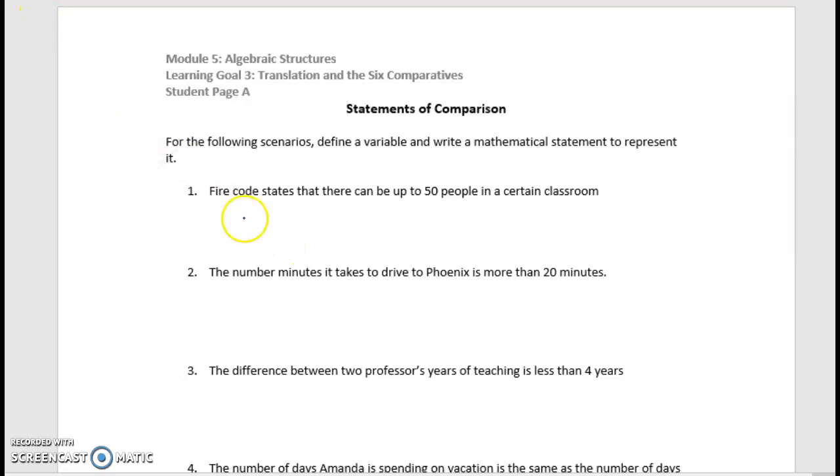So if we want to look at number one here, and we say that the fire code states that there can be up to 50 people, first of all, we have to figure out what our variable is. We're talking about the number of people, so we can define a variable as P equals the number of people. And remember, we're looking for kind of three things here. We're looking for the variable, and it's something that pertains to the problem. And we have to be able to quantify that variable, so in this case it's the number of people that we're working with. We want it to be up to 50 people, so that means that P has to be no more than or equal to 50 people.